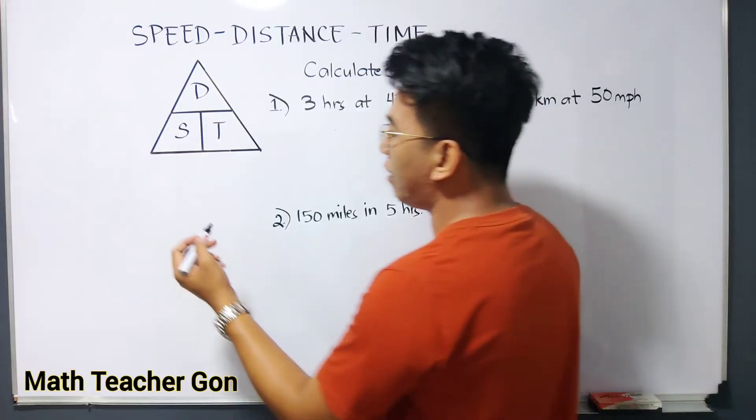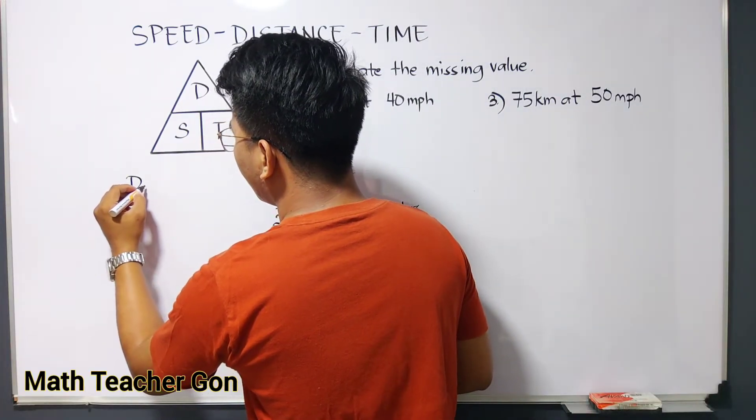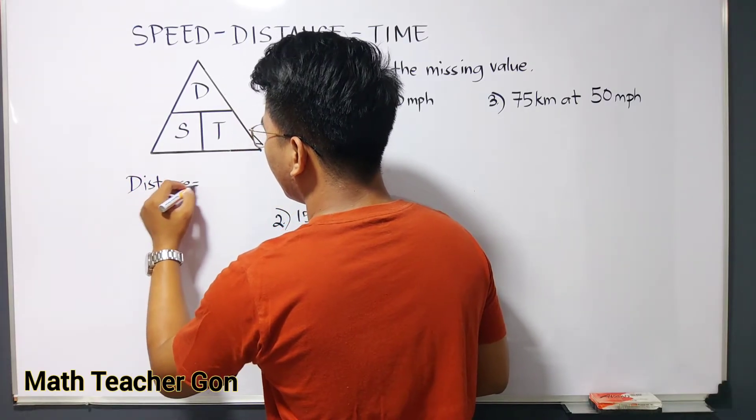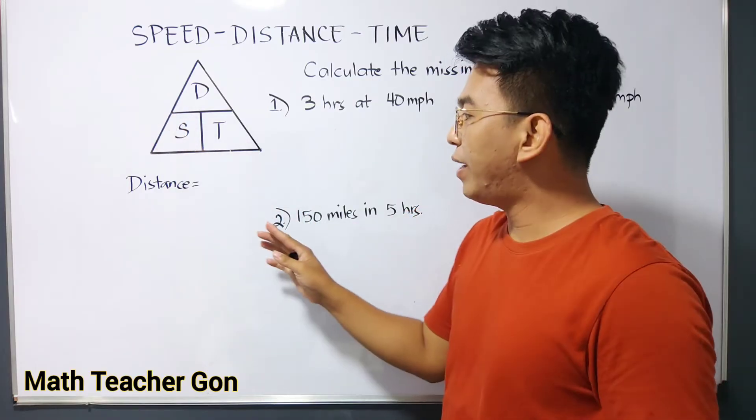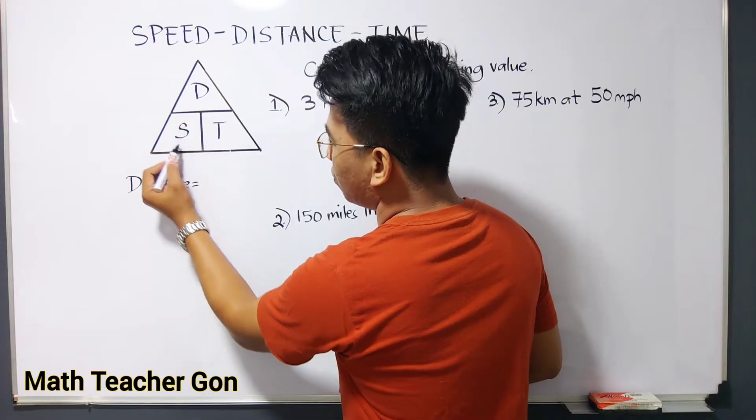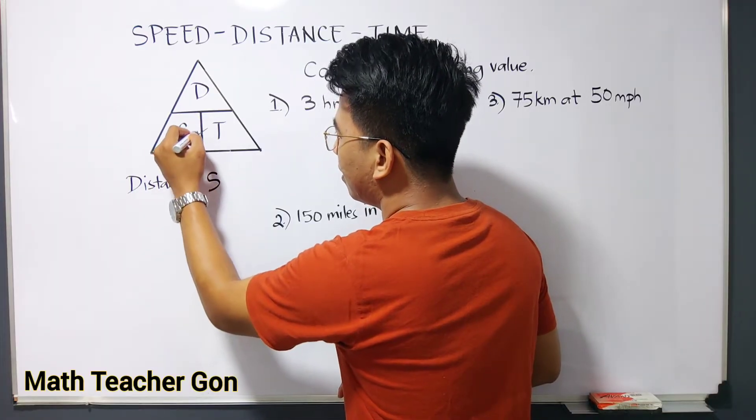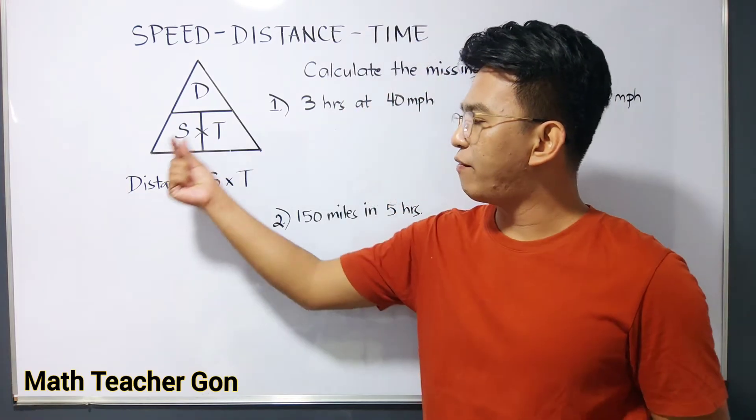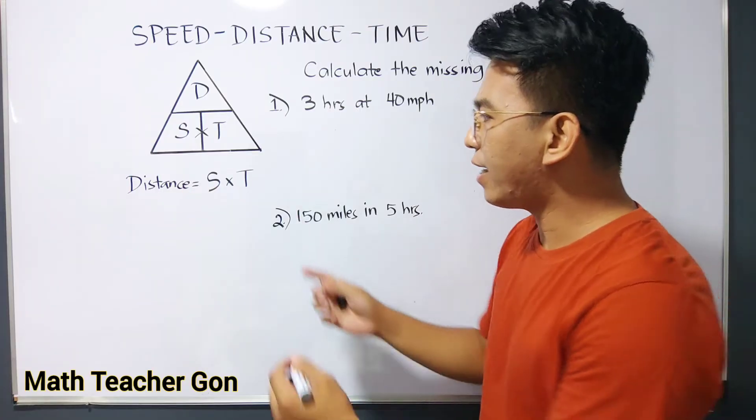If you will be calculating for the distance, you have your distance. Using this formula, or using this triangle, we can derive the formula distance is equal to these two: speed S times time. So as you can see, we have D, or distance, is equal to speed times time.